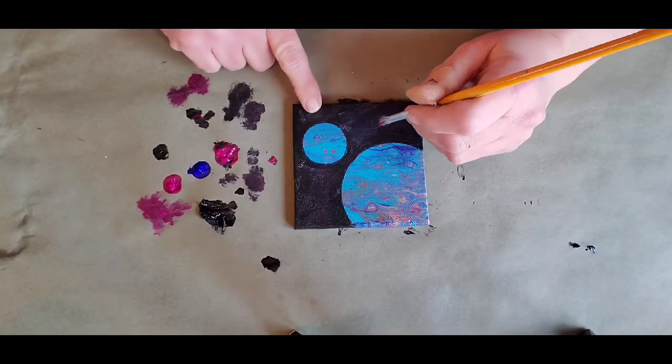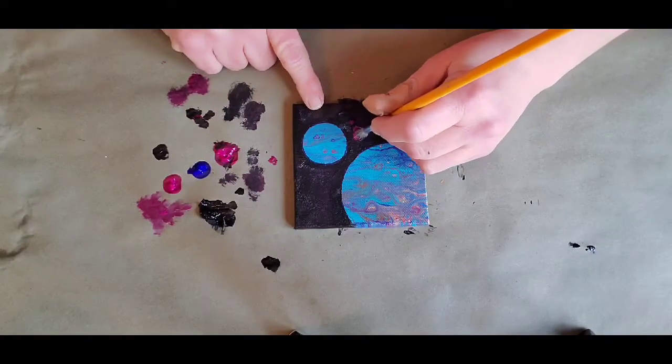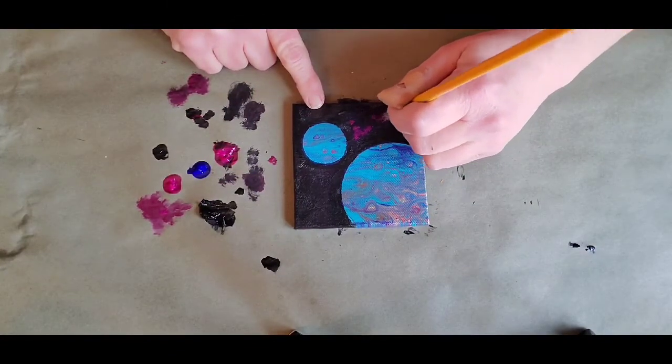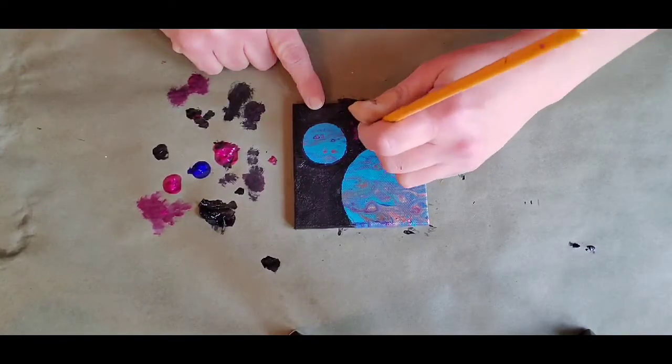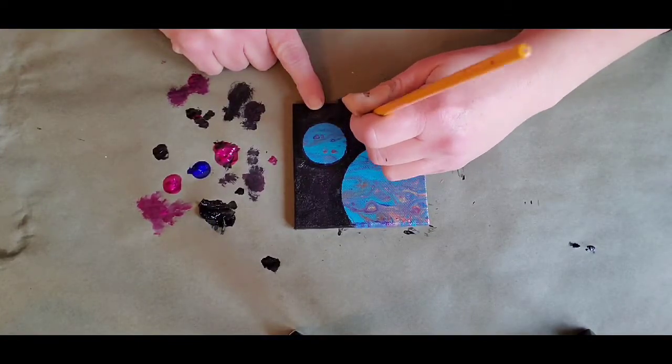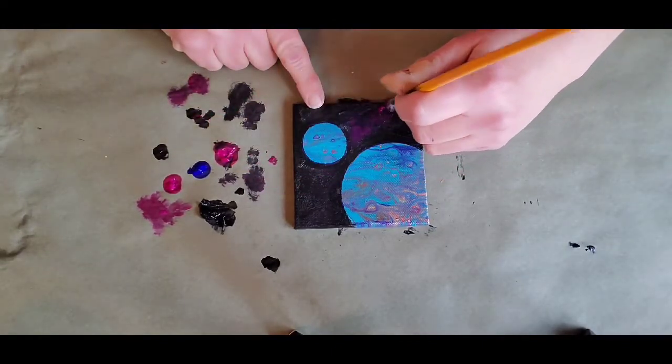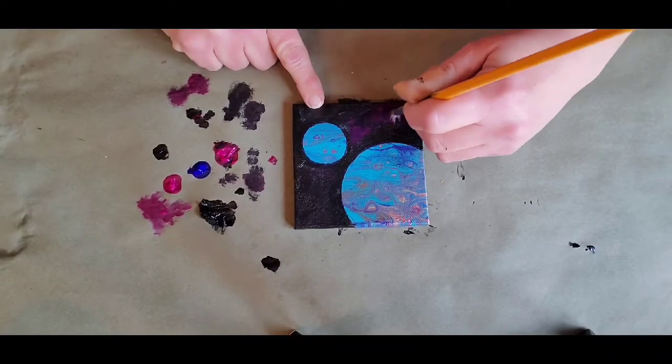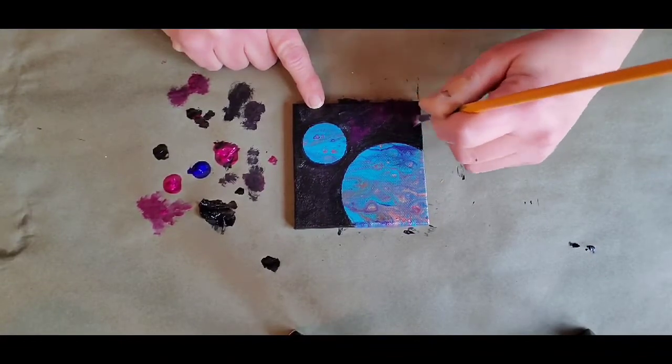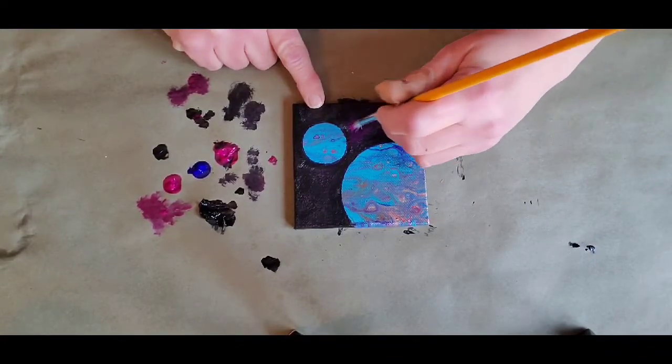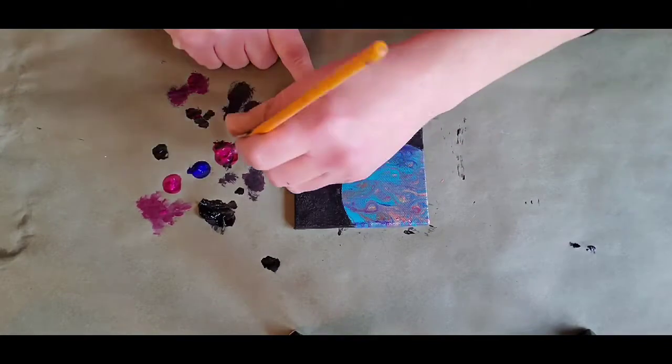I'm starting with a Winsor & Newton Primary Magenta and using a very small, round, coarse bristled brush. It's a dry brushing technique where you just kind of put some paint on there and tap it out, moving the paint around as you tap.